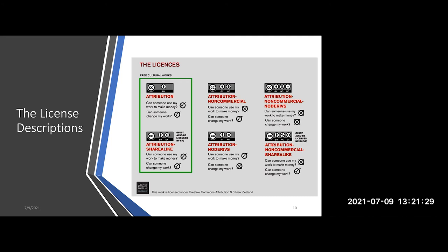The very last one at the bottom right is CC BY NC SA — Creative Commons Attribution Non-Commercial Share Alike. Can someone use my work to make money? No — that's the NC. Can someone change my work? Yes, because we have not eliminated that as an option in this suite of six licenses. Each one of these has its own meaning and messaging, both to you as a creator deciding how you want to license your work, or to you as a user looking for materials and wanting to use that work within your situation.